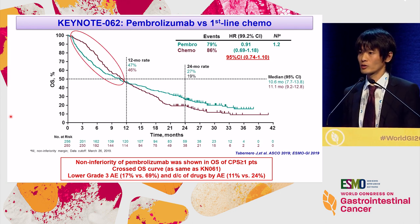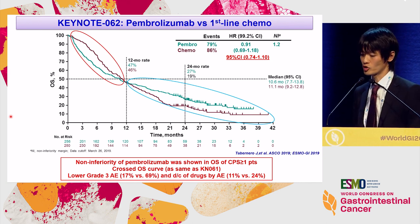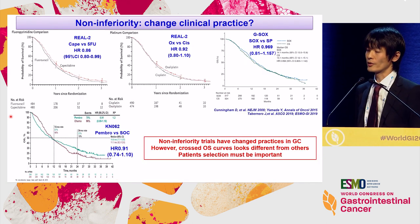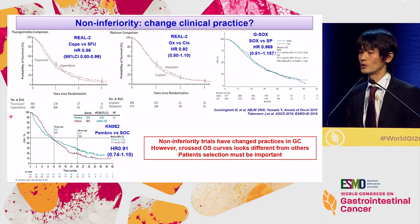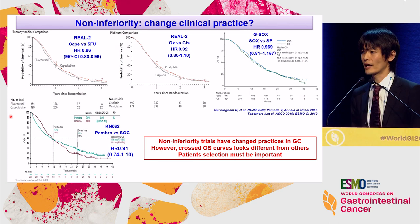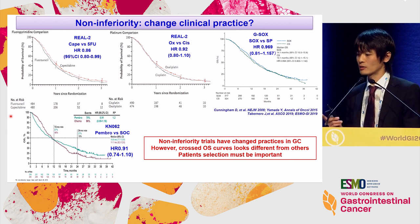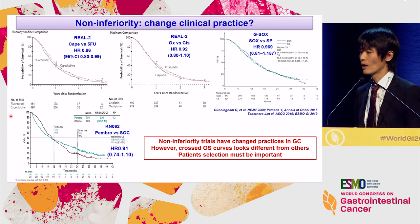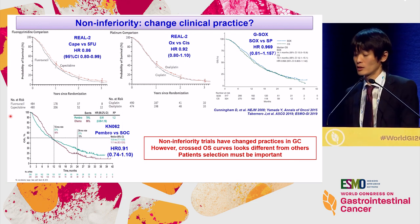However, it showed a crossing survival curve. Initially, Pembrolizumab did worse, very similar to Keynote 61. After the median, a late survival benefit of Pembrolizumab was suggested. In the gastric acid field, non-inferiority trials have changed clinical practice to use oral fluoropyrimidines like S-1, capecitabine, or oxaliplatin. Hazard ratios from Keynote 62 are in line with past pivotal non-inferiority trials. However, the crossing survival curve is one of the main concerns for applying this into clinical practice.